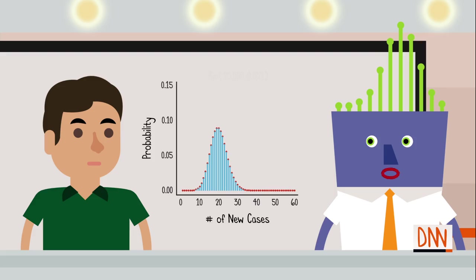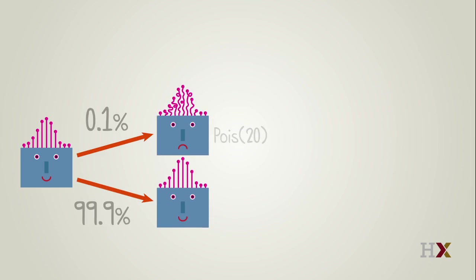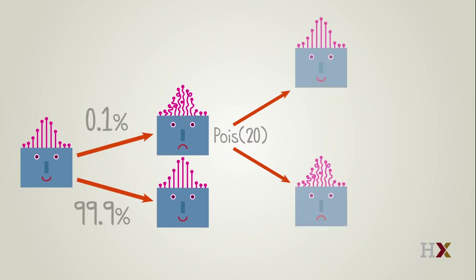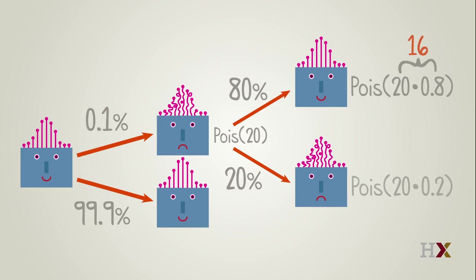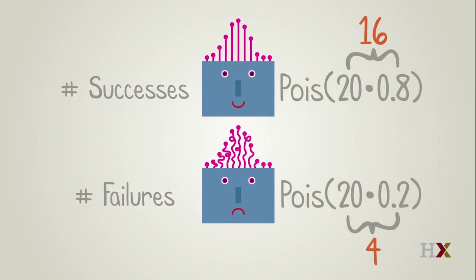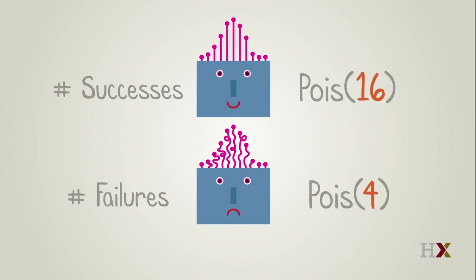That looks very pretty, like a bell-shaped curve. That's another story. But tell us, Professor, how many of the new cases do you predict will be cured? Let's assume that the number of new cases is Poisson(20), and that they all try the new treatment with success probability 0.8. Then the expected number of new cases treated successfully is 0.8 times 20, which is 16, and the expected number treated unsuccessfully is 4. The distribution of the number of successes is Poisson(16), and the distribution of the number of failures is Poisson(4). Surprisingly, these two quantities are independent.